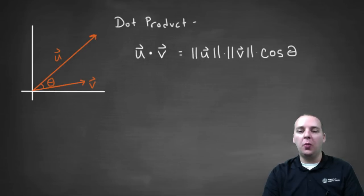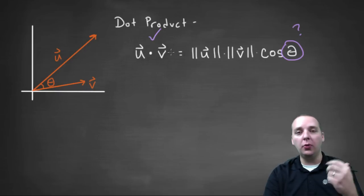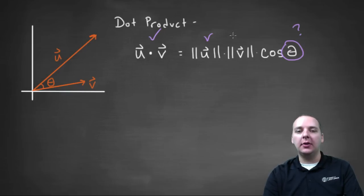Now what we can use this for is we can actually use this to discover the angle that's between two vectors, because if you're given the two vectors, obviously you can take their dot product the old way, and you can obviously take their magnitude of each of u and v. And so after a little algebra you can solve for theta.